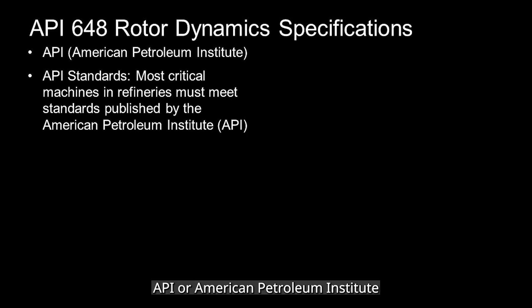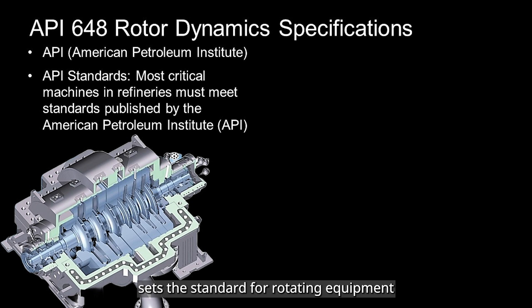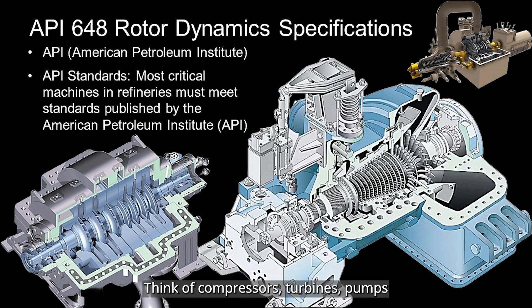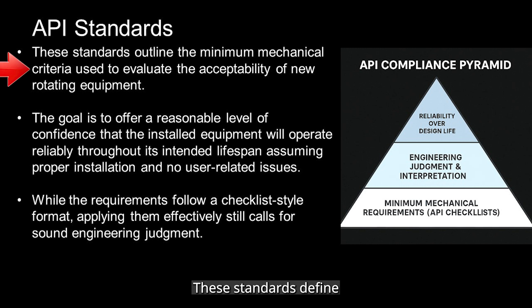API or American Petroleum Institute sets the standard for rotating equipment used in refineries and heavy industry. Think of compressors, turbines, pumps, and gearboxes. These standards define the minimum mechanical acceptance criteria for new rotating machinery.